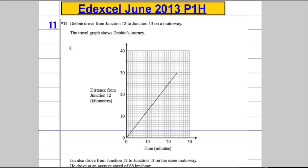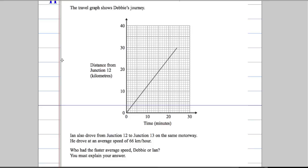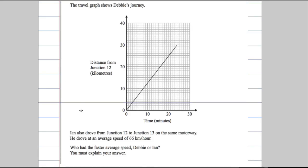The travel graph shows Debbie's journey. And it says that Ian also drove from Junction 12 to Junction 13 on the same motorway. He drove at an average speed of 66 kilometers per hour. Who had the faster average speed, Debbie or Ian? We must explain our answer.